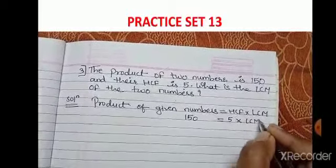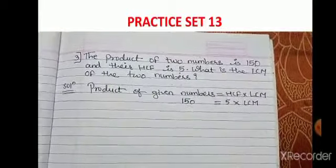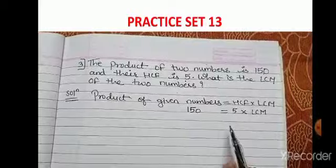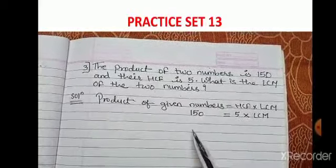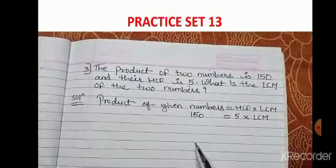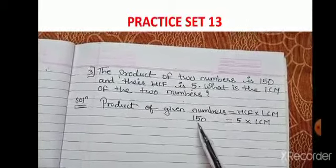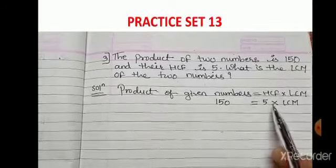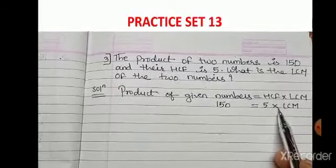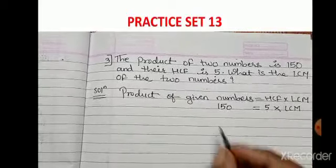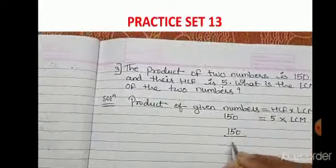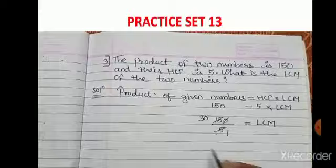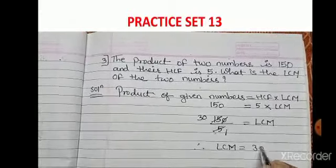To find LCM, we bring 5 to the left hand side. Since 5 was multiplying, it becomes division: LCM = 150 ÷ 5. Dividing: 150 ÷ 5 = 30. So the LCM is 30.